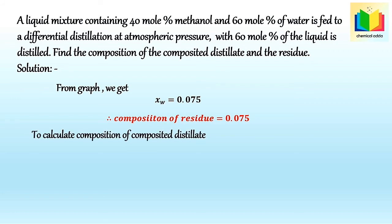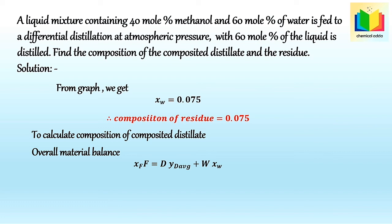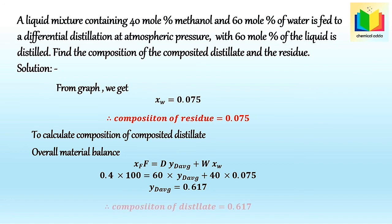To calculate the distillate composition, we write the overall material balance: Xf × F = D × Yd_average + W × Xw. Substituting values: 0.4 × 100 = 60 × Yd_average + 40 × 0.075. Solving this, we get Yd_average = 0.617.